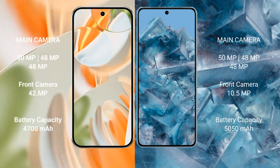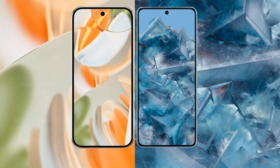The Google Pixel 9 Pro features a rear triple camera setup: 50MP plus 48MP plus 48MP, and a 42MP front camera. It has a 4700mAh battery with 27W fast charging support. The Google Pixel 8 Pro has a 5000mAh battery with 30W fast charging support.